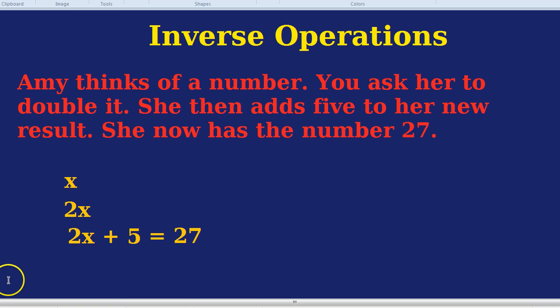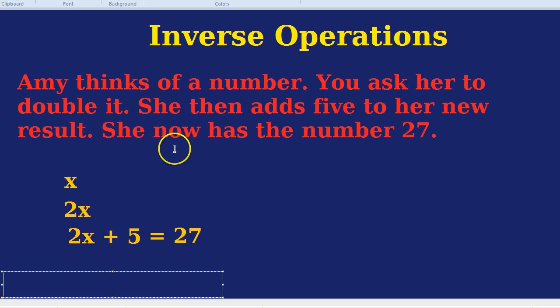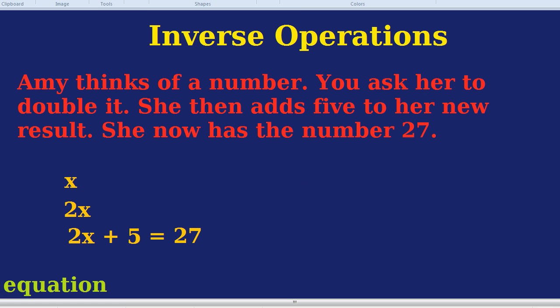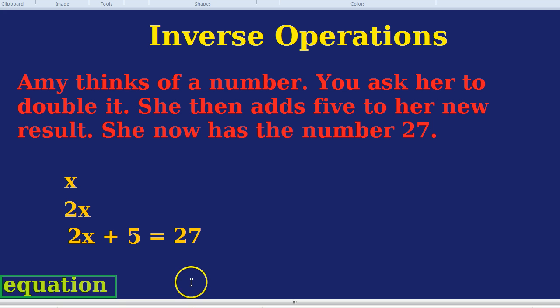So 2x plus 5 equals 27. We've created an equation. We'll be talking about equations a lot more, but let's just note for the moment: this is an equation because of the equal sign. Equations are your best friend — well, to me anyway. Now, we said we were going to do the inverse — the opposite of each of the operations we did.